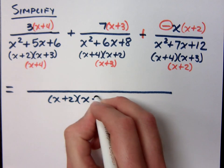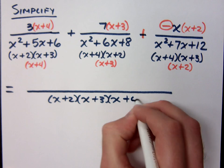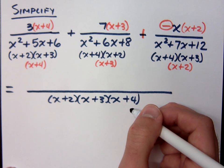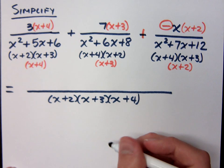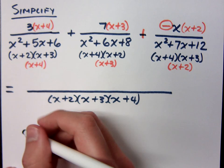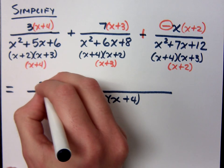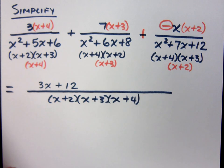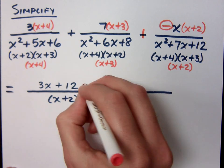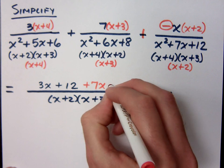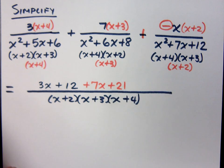Your job now is to worry about those numerators. Multiply out those numerators and tell me what we get. What's this first numerator? What does he become? 3x plus 12. What about the middle guy? 7x plus 21. Plus 7x plus 21. And the last guy?